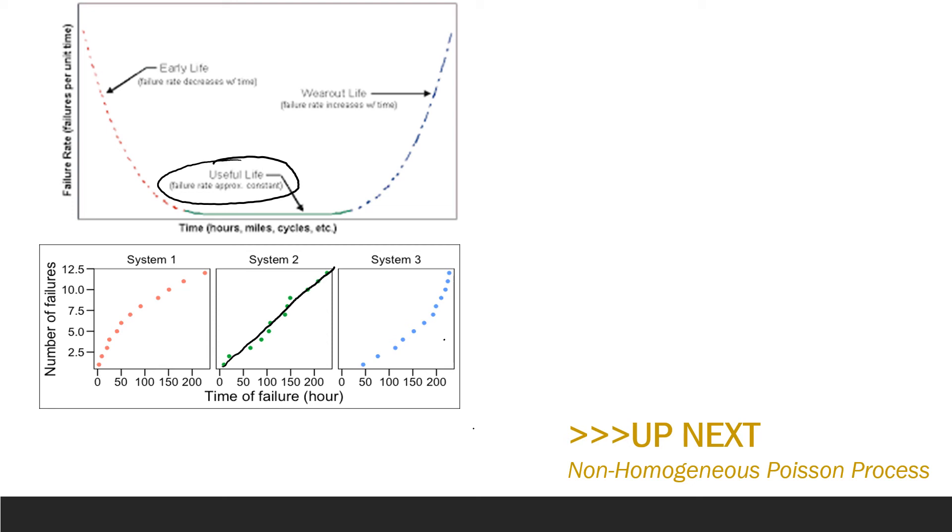So the slope is constant here whereas in system 1 and system 3 we have a changing slope as time goes on which is indicating that our failure rate is changing. Think of failure rate as some slope. So if we have a constant slope we'll observe a linear relationship when we're looking at number of failures versus time. And for system 1 and system 3 we're looking at a changing failure rate.